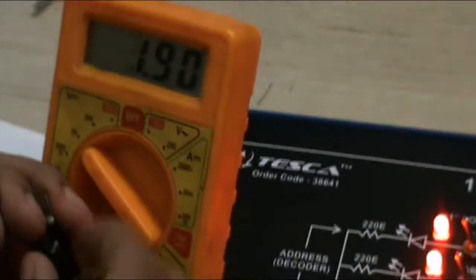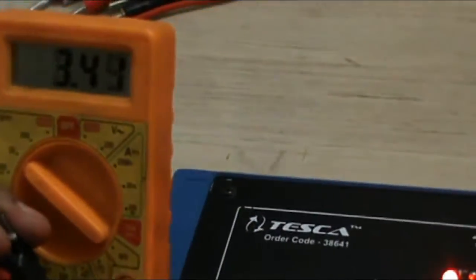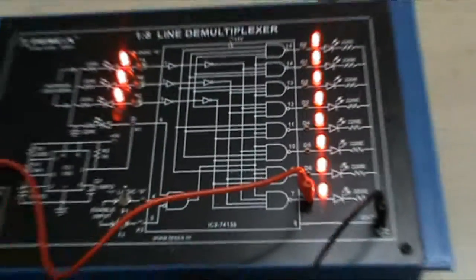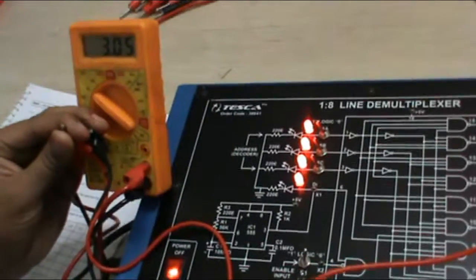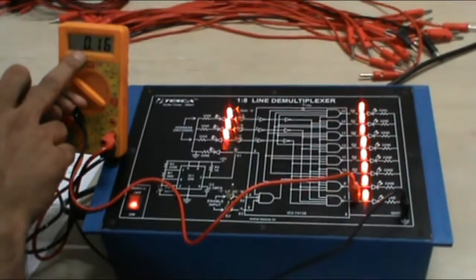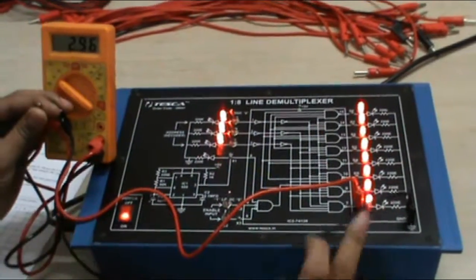Now the voltage will fluctuate because the LED is also blinking. When the LED will blink to on it will show the voltage and again off. So it is showing voltage approximately 3.43, which is the maximum voltage when the LED is glowing.